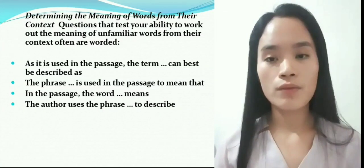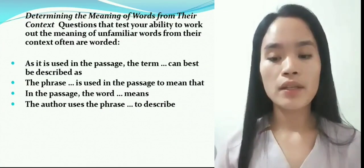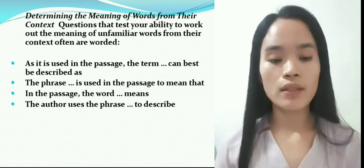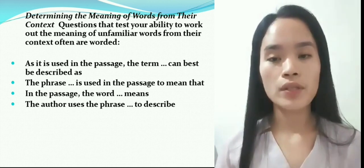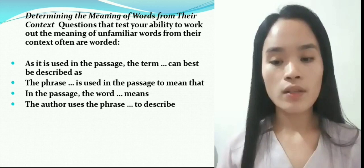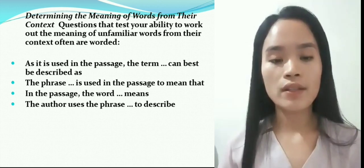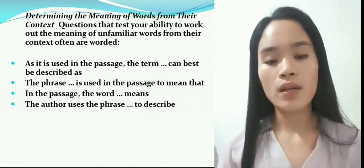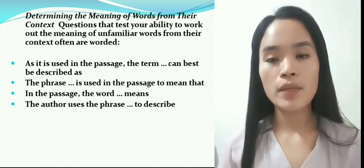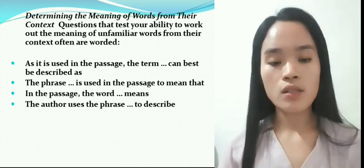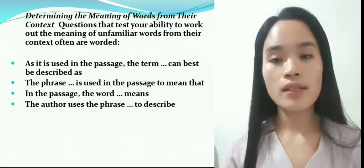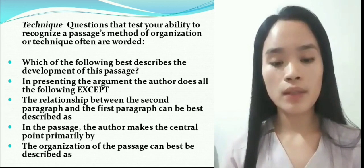The fifth category of reading comprehension questions is determining the meaning of words from their context. This tests your ability to work out the meaning of unfamiliar words. It is one of the frequently asked question types, based on finding contextual meaning. Such questions test your vocabulary with reference to the given passage and ask you to identify the meaning of a particular word or sentence in the passage.